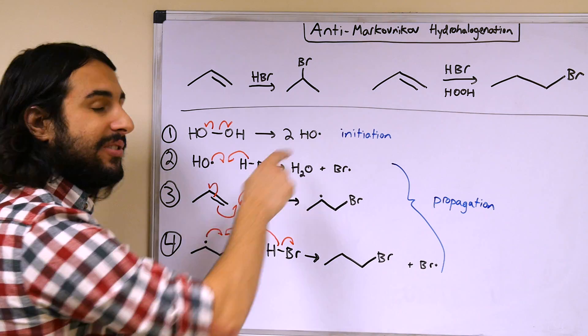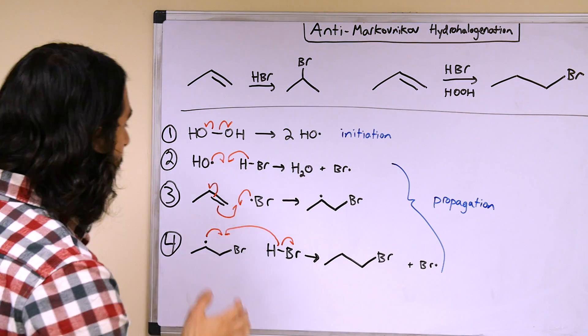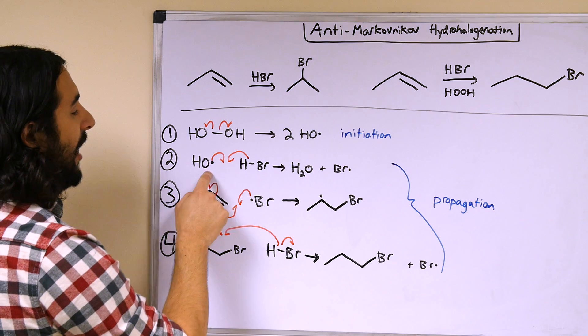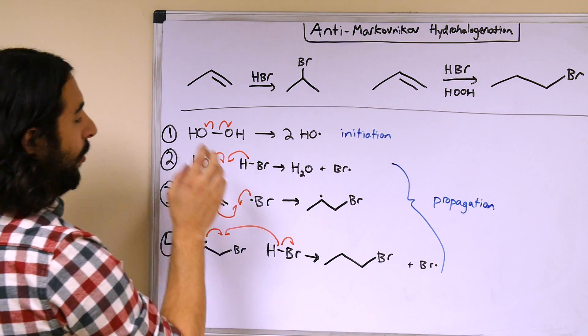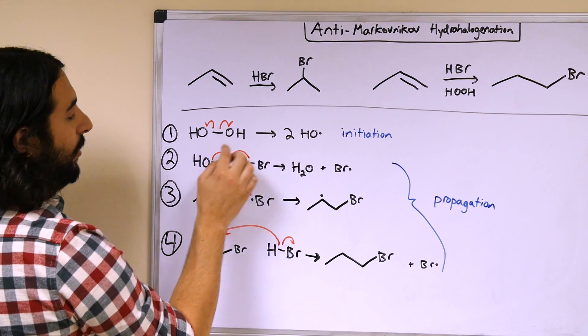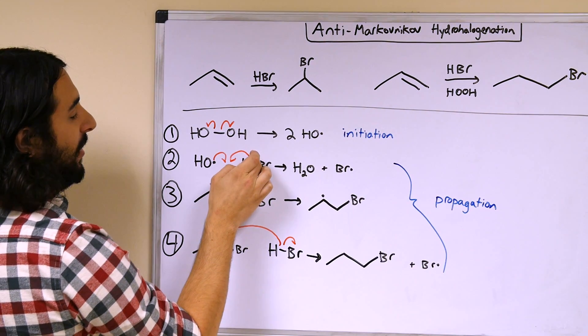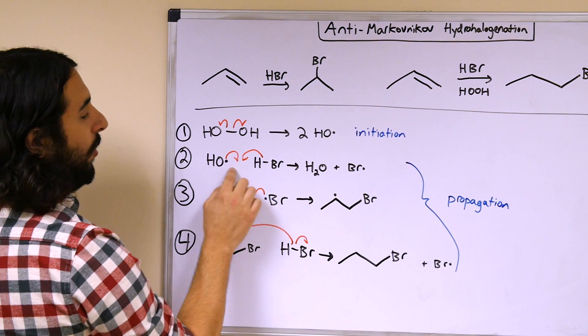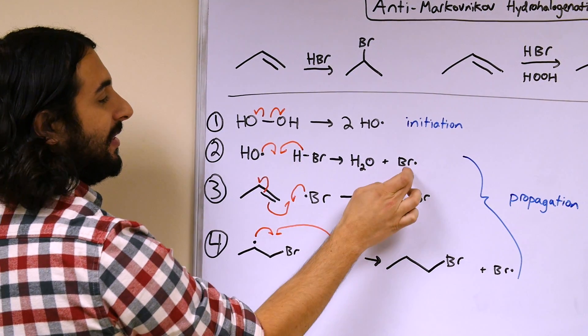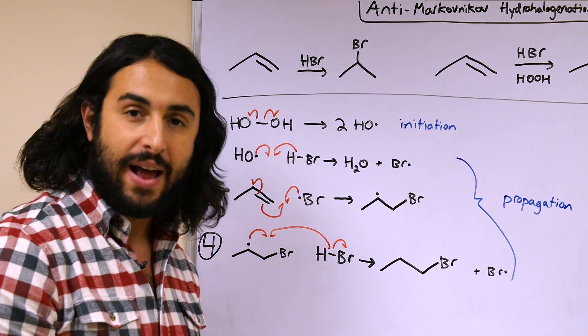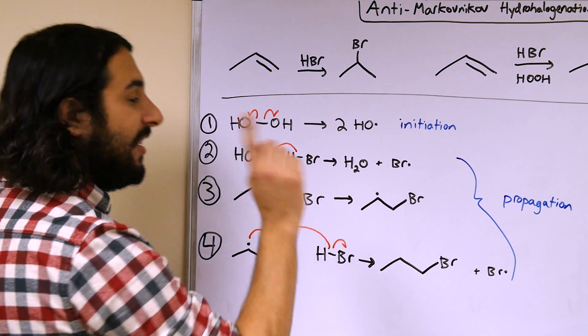So it's those hydroxyl radicals that are going to propagate the formation of other radicals. So let's say that a hydroxyl radical finds one of these molecules of HBr. Well what's going to happen is this radical and then one electron from this covalent bond are going to form a new one and now we've got a water molecule, and then that's going to propagate the existence of a bromine radical.